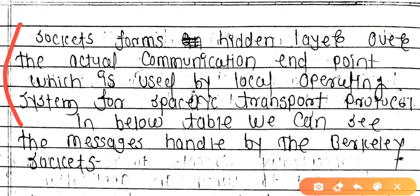This hidden layer is used by the local operating system. The communication facility of your computer's operating system has a hidden layer created on top of it, which is the sockets layer - a separate communication facility. Just as WhatsApp is a separate messaging service on mobile, similarly in the below table we can see the messages handled by Berkeley sockets. WhatsApp is separate, Facebook is separate - each messaging application is a separate service.